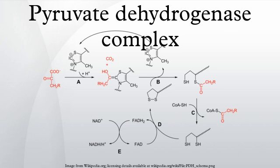In contrast, in Gram-positive bacteria and eukaryotes the central PDC core contains 60 E2 molecules arranged into an icosahedron. Eukaryotes also contain 12 copies of an additional core protein, E3 binding protein. The exact location of E3BP is not completely clear. Cryoelectron microscopy has established that E3BP binds to each of the icosahedral faces in yeast. However, it has been suggested that it replaces an equivalent number of E2 molecules in the bovine PDC core.